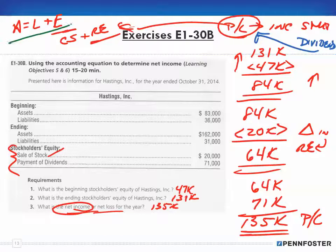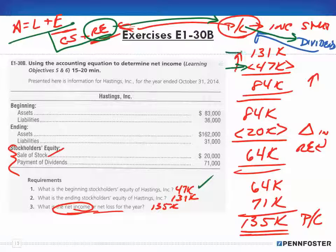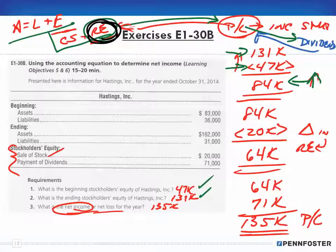Let me quickly summarize what I did. The basic accounting equation is: assets equals liabilities plus equity. Part of equity is common stock plus retained earnings. Our retained earnings changes based upon our profit or loss, and our profit or loss is affected by any dividends paid out. I started with $47,000 in beginning equity from requirement one, and ending equity was $131,000 from requirement two. The difference means equity increased by $84,000.